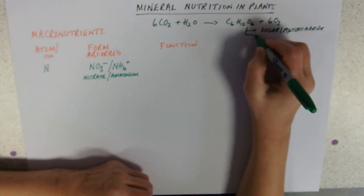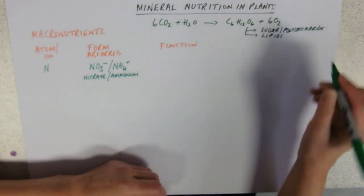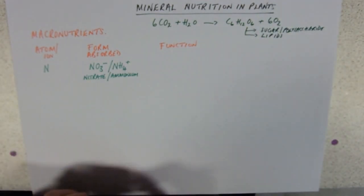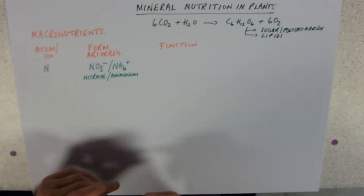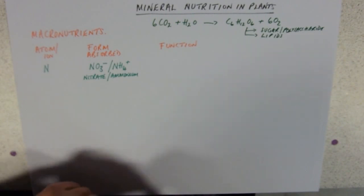With just carbon, hydrogen, and oxygen we can make lipids as well. But obviously if you're going to make a protein, you're going to need a nitrogen atom to make that amino group.